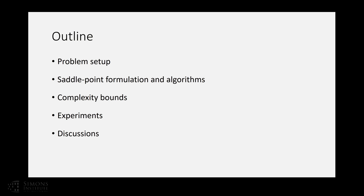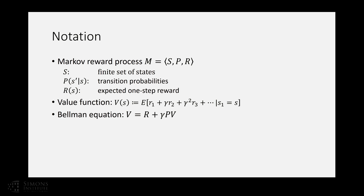Let's start with the problem setup. We model the problem as a Markov reward process (MRP). This differs from typical reinforcement learning where we look at a Markov decision process. Here we look at policy evaluation — there is no action. We remove the action and MDP becomes MRP, just the reward. You can think of it as a Markov chain with a reward function added, and the value function is the total sum of discounted rewards for the future starting from that state.